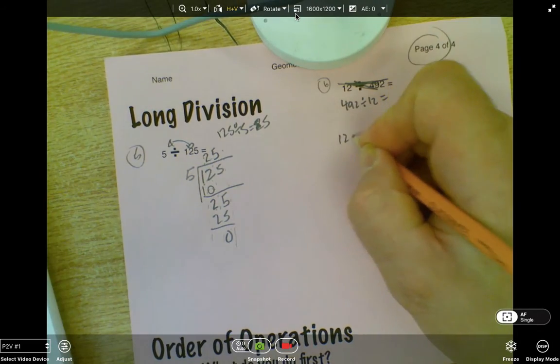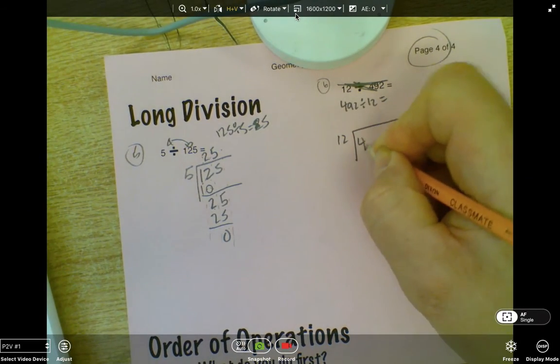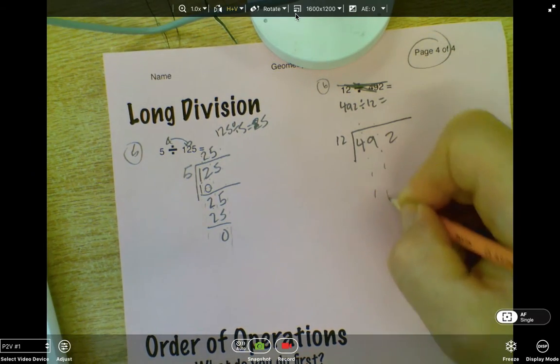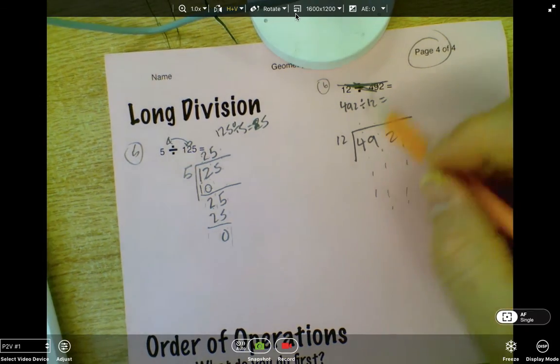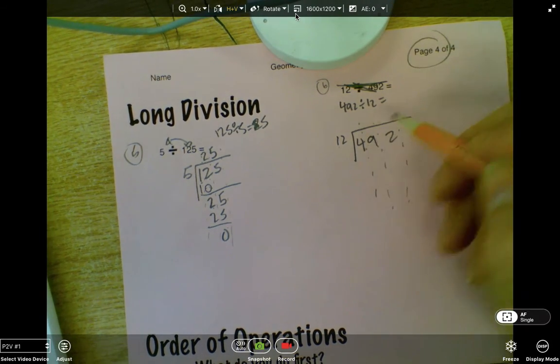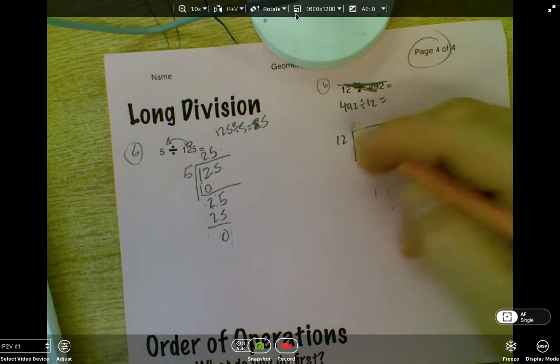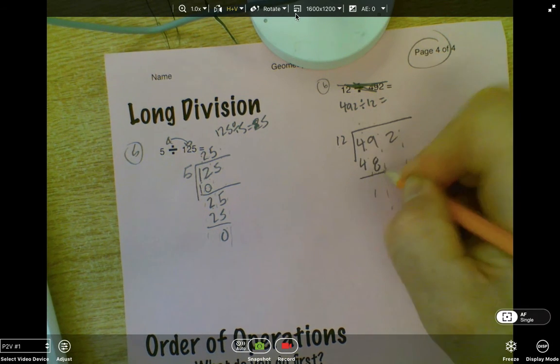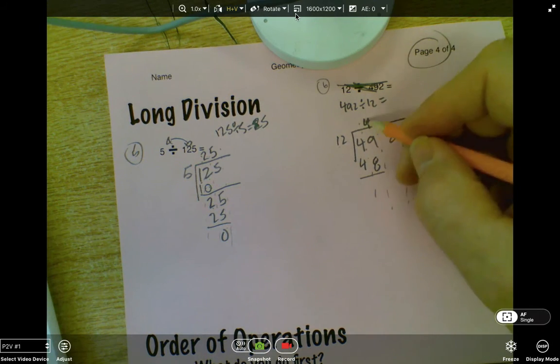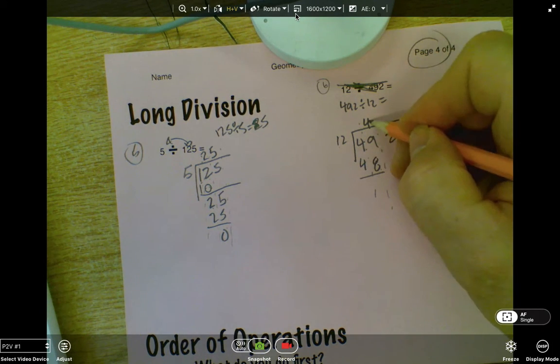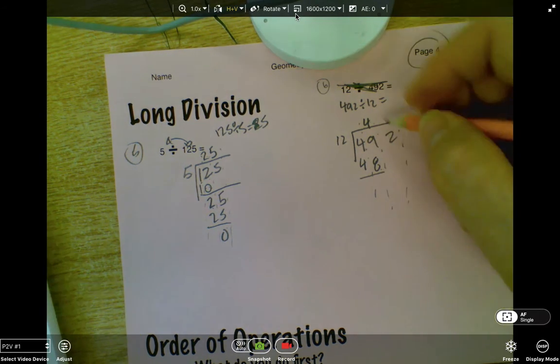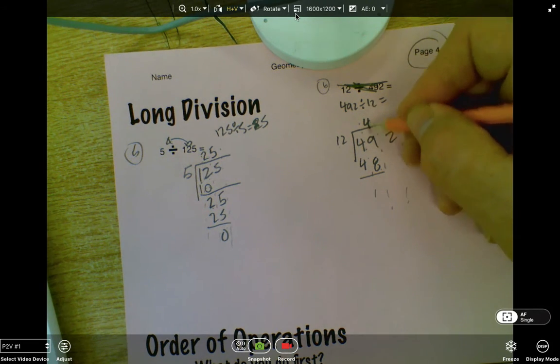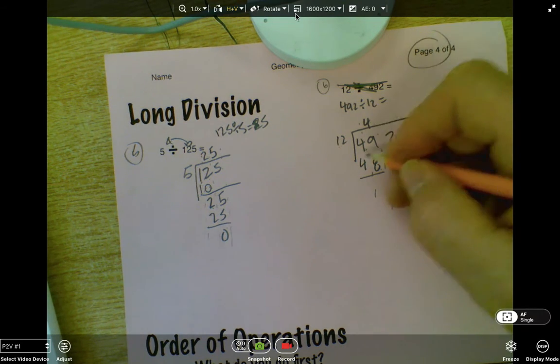Okay, let's try this harder one. 12 into 492. Again, how many solid groups of 12 can I make with four? None. How many groups are in 49? Well, I can go to 48. 48 will give me four groups of 12. Four times 12 is 48. So I can remove four groups here. Now, secretly, this is really in the tens column. So really, eventually, that's going to be 40 groups. But for now, let's just think of it as four groups.